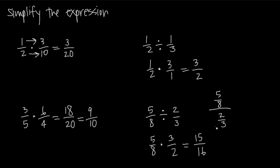This is 5/8 divided by 2/3. So when you see this, you can take the numerator — 5/8 — and instead of dividing by 2/3, you can multiply by whatever you get when you flip that denominator upside down. So instead of 2/3, you do 3/2. Now you have a fraction multiplication problem, and you multiply across to get 15/16. So that's how you do multiplication and division with simple fractions.